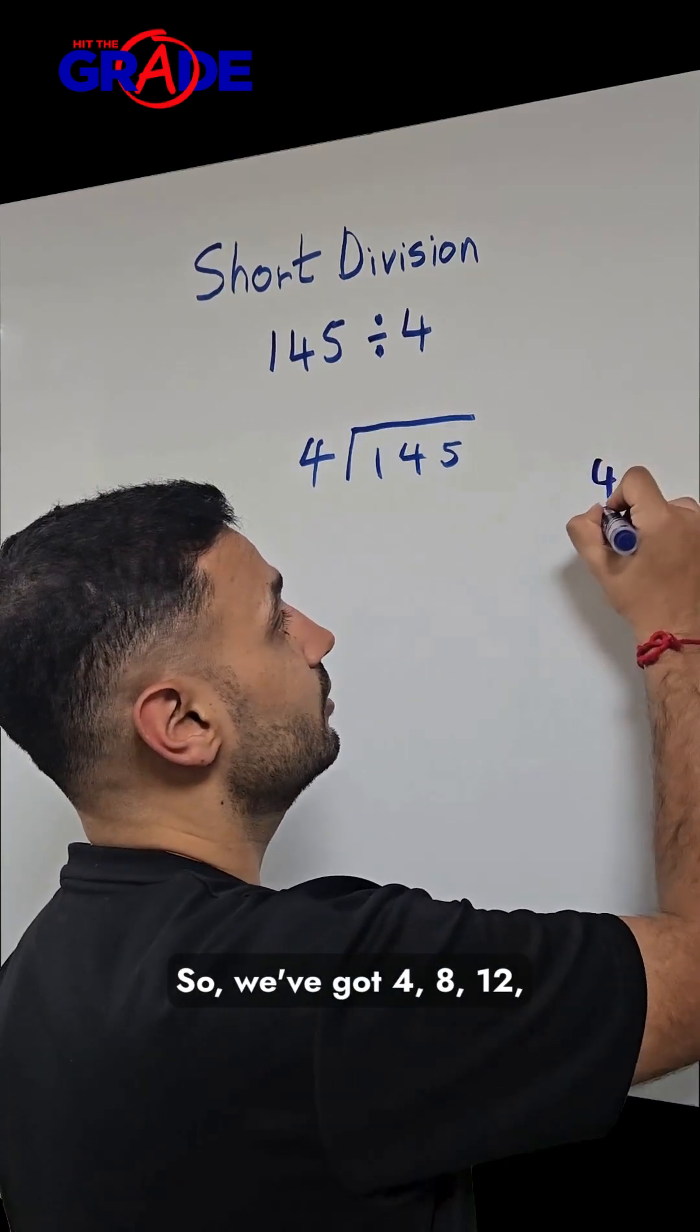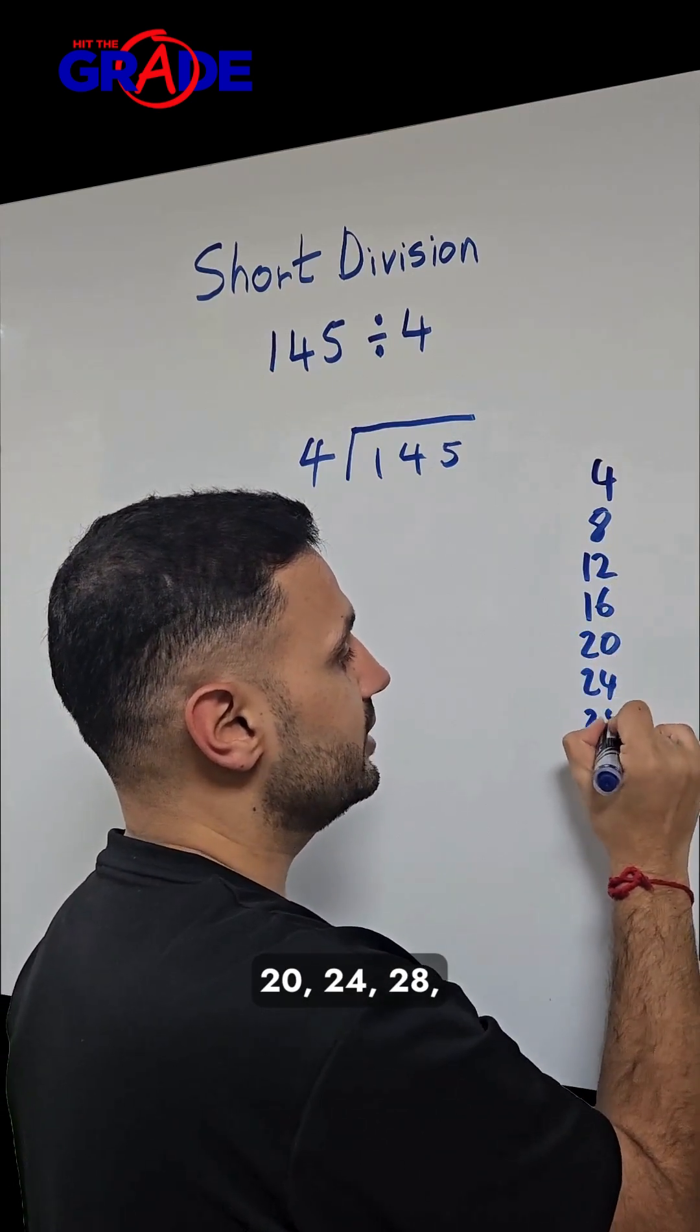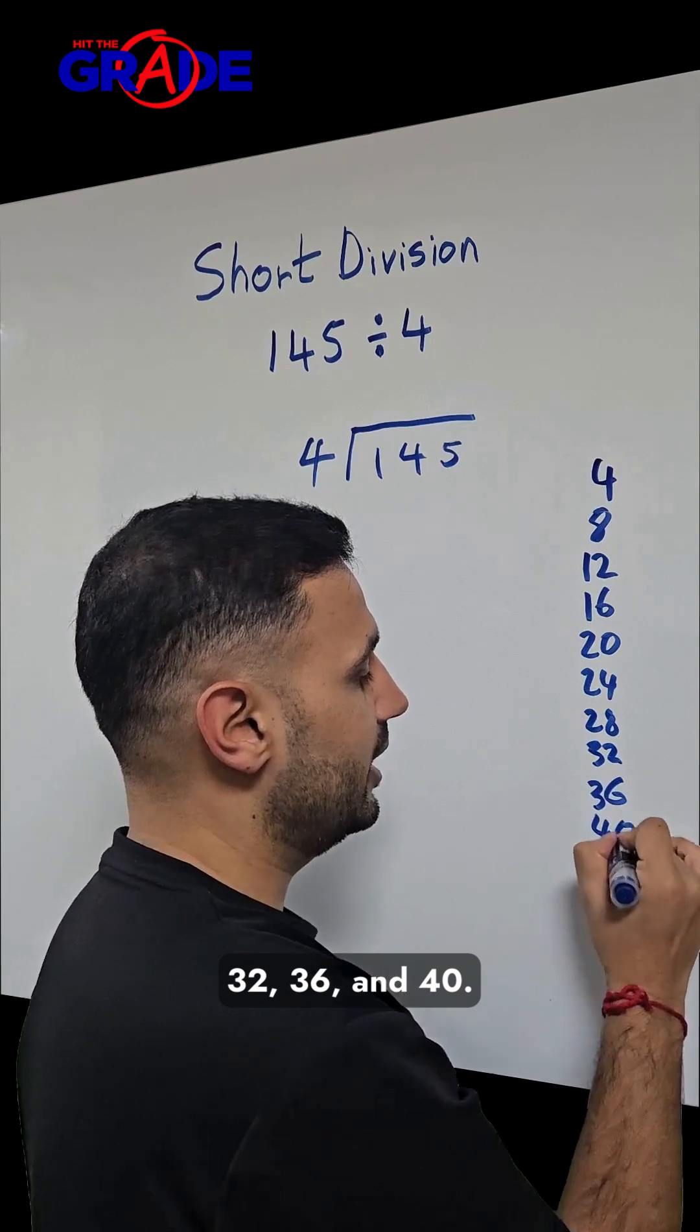So we've got 4, 8, 12, 16, 20, 24, 28, 32, 36, and 40.